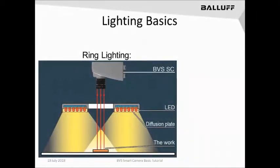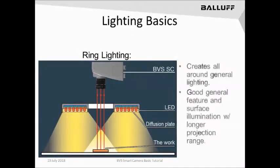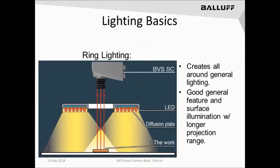Ring lighting is a very common technique used to produce a very good general all-around lighting source. This light source can be used to light up different aspects or all aspects of a part for both its surface areas and external features. However, it can also make it more difficult to see specific features within a known object. The high density of LEDs produces a great deal of illumination and therefore can work very well as a long projection source when the light needs to be located further away from the part.